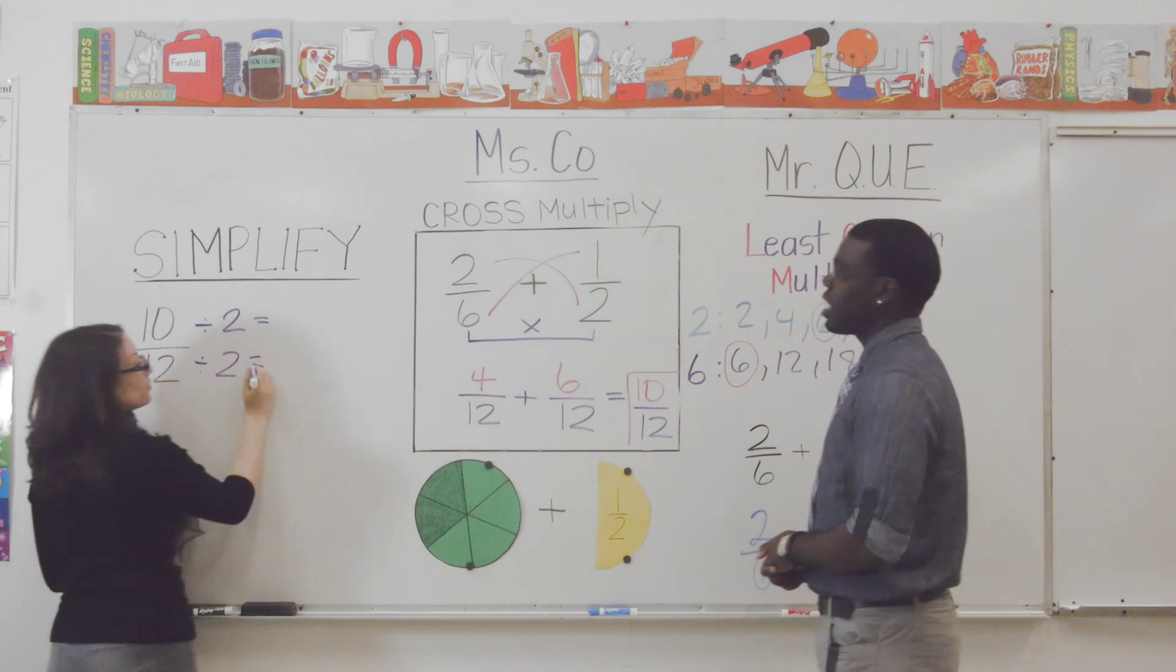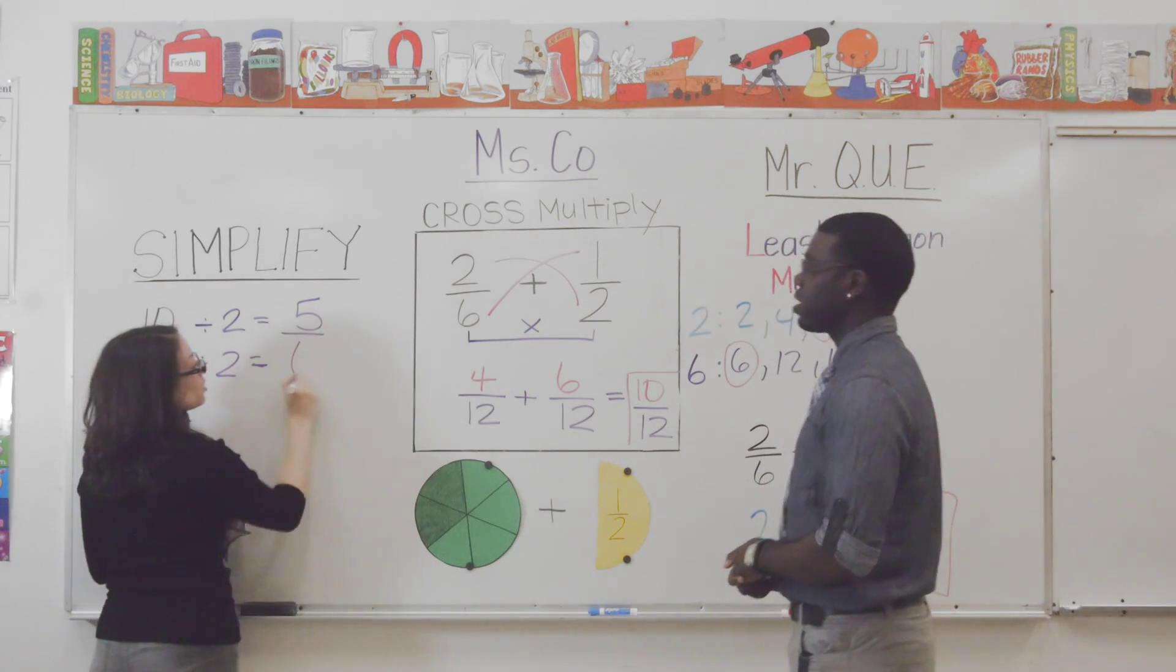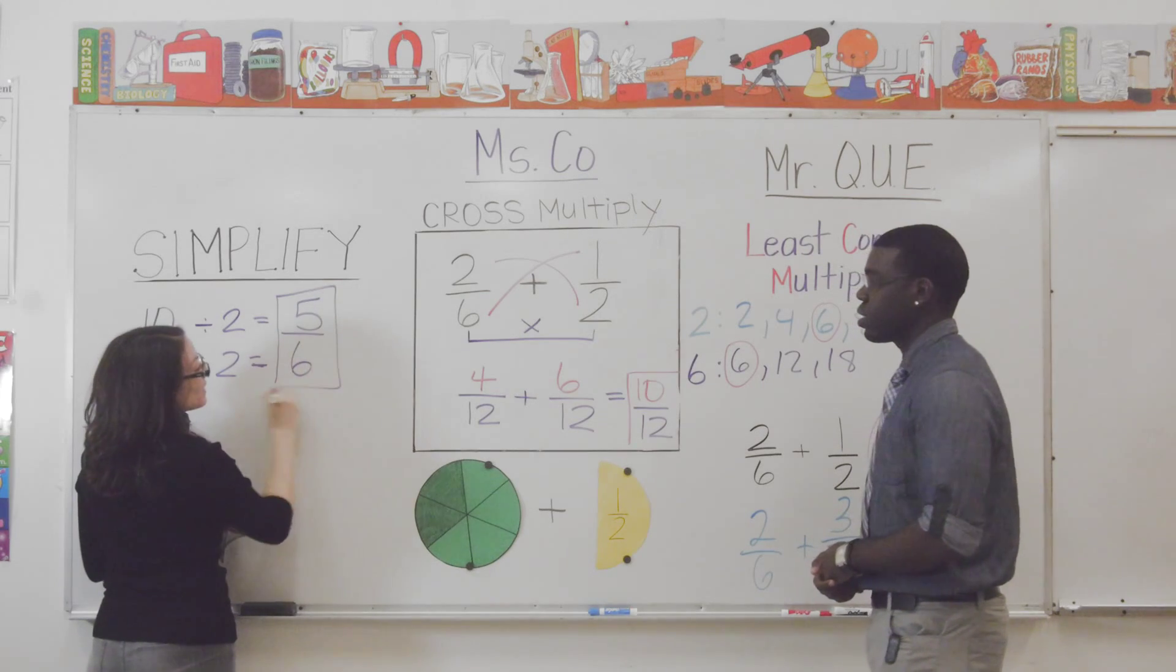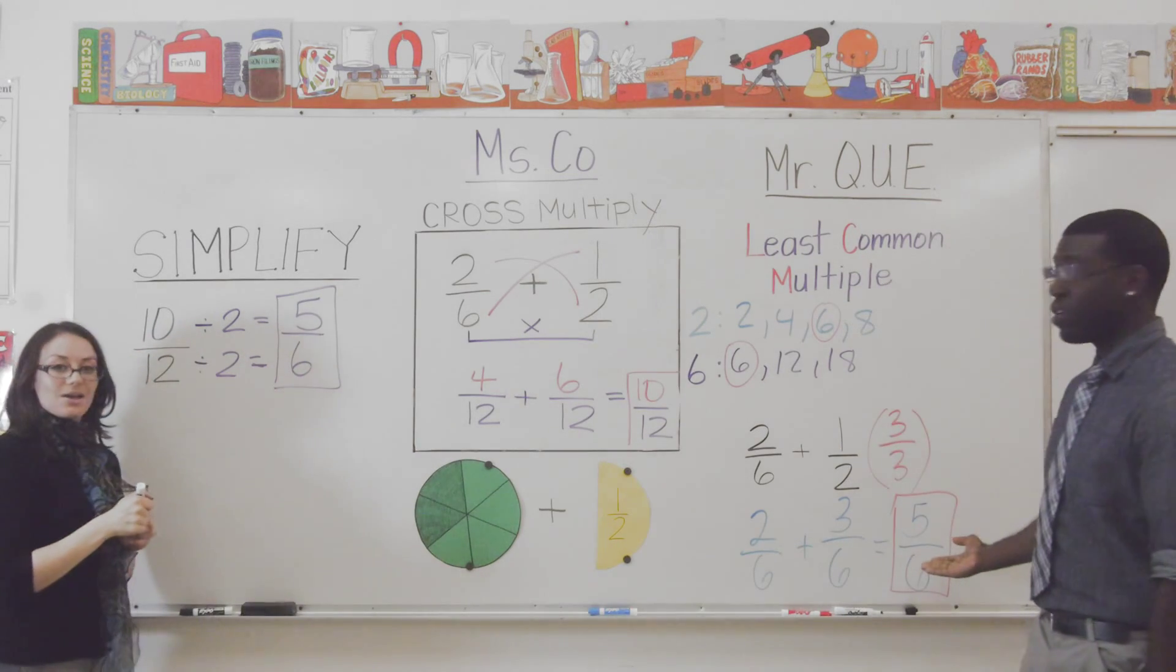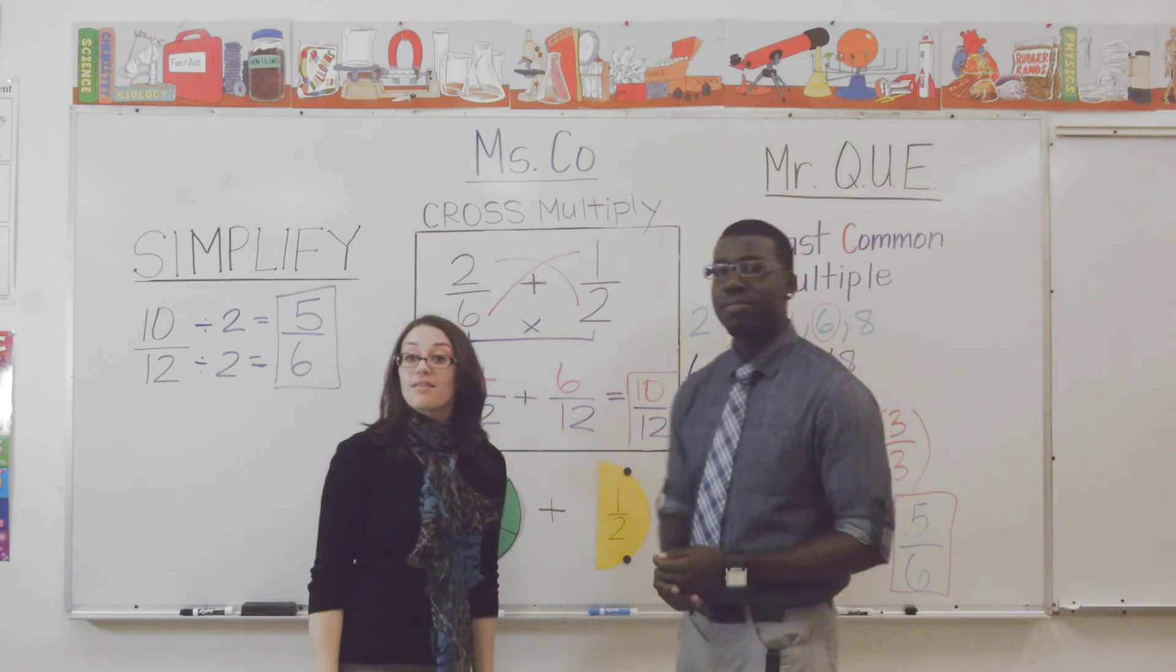Okay. And what about twelve divided by two? That's six. So, now we get five-sixths, and our answers match. Now you can solve some other problems with adding unlike fractions.